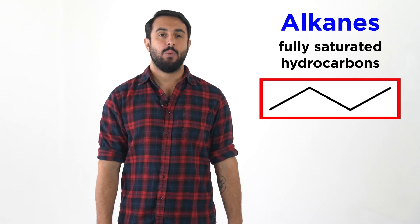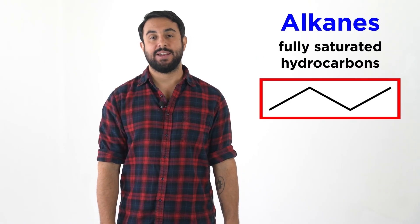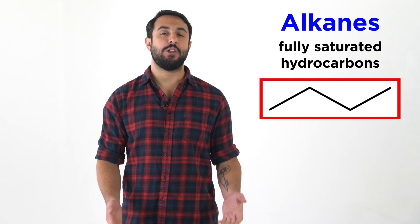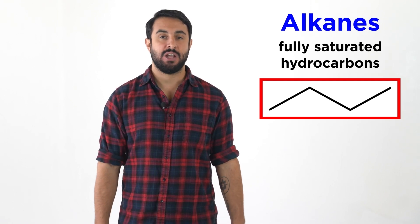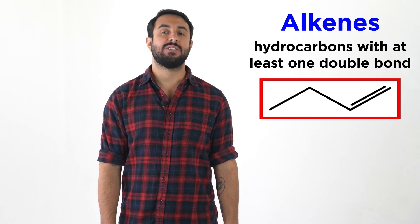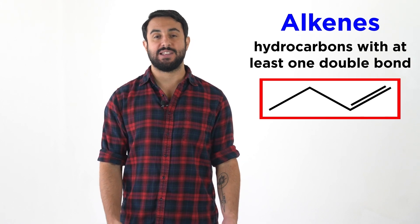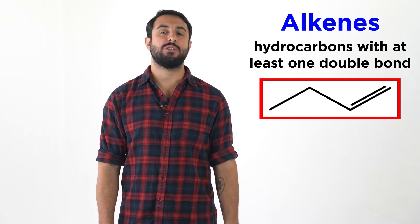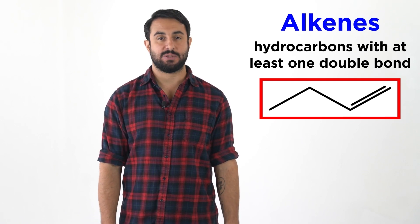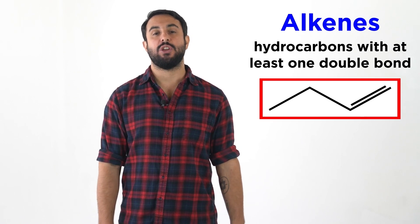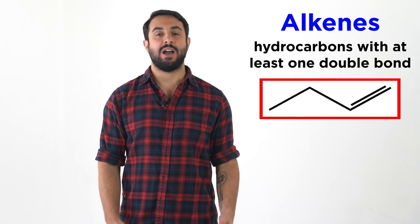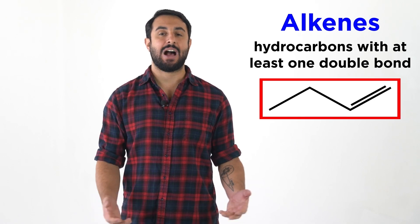Professor Dave and Chegg here. We know that alkanes are fully saturated hydrocarbons, so all the carbons are sp3 hybridized, with only sigma covalent bonds between them. Let's now move on to some different kinds of hydrocarbons, namely those with at least one pi bond between the carbon atoms. If we have a hydrocarbon with a double bond present, this will no longer be called an alkane — this is called an alkene.